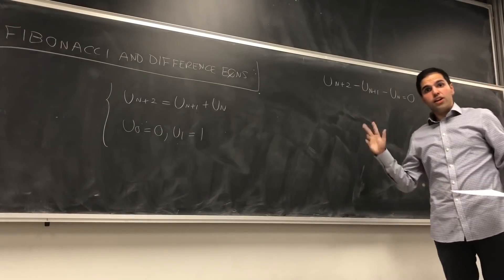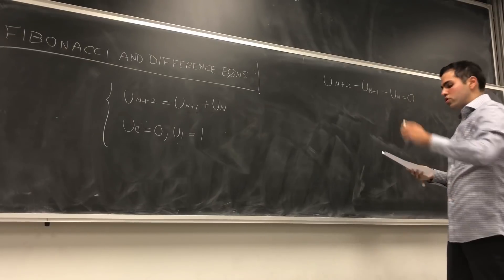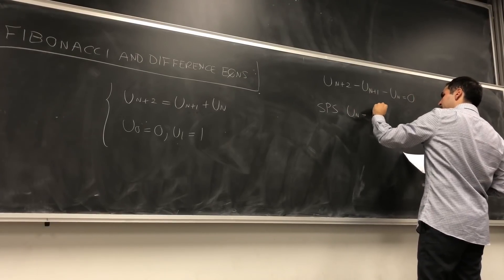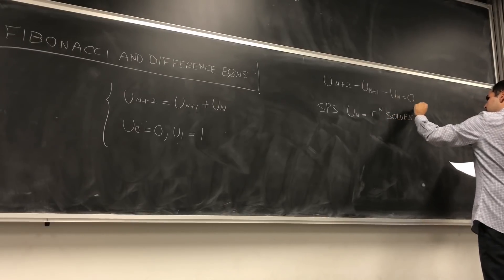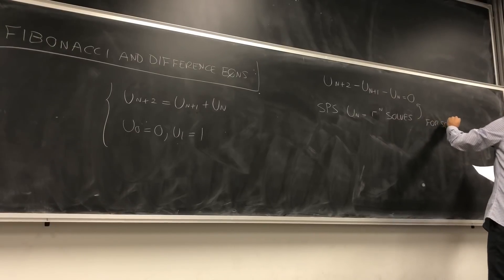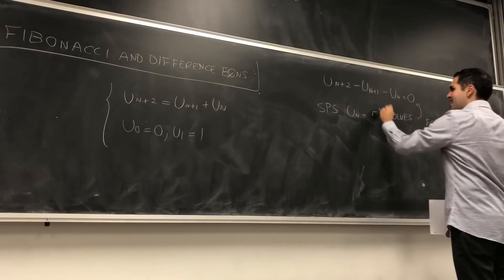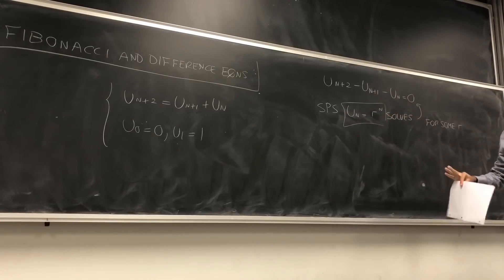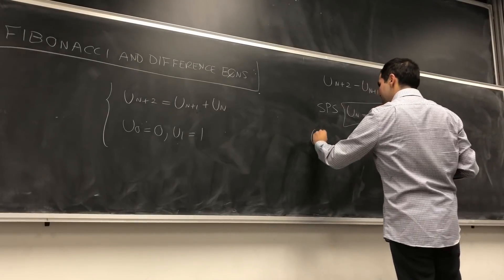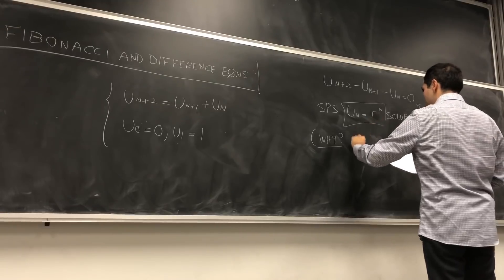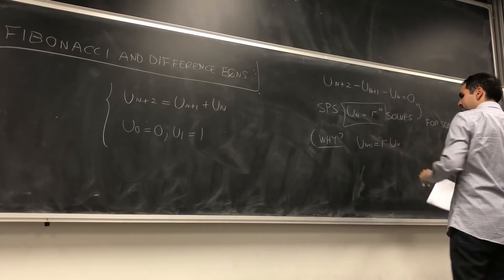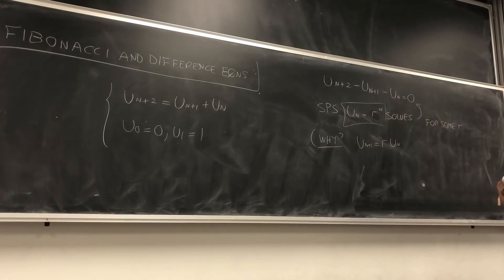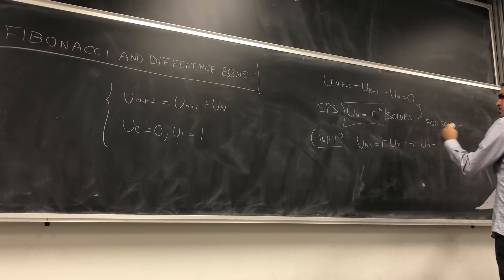Here's a clearer idea: suppose that u_n equals r to the n solves this for some r. Where did this ansatz come from? It turns out this is a solution of one of the simplest difference equations. If you take u_{n+1} equals r times u_n, the solution is precisely a times r to the n — it's just a geometric sequence.